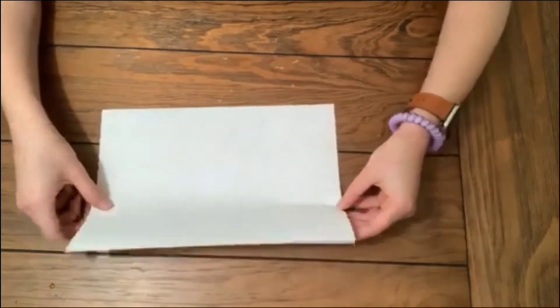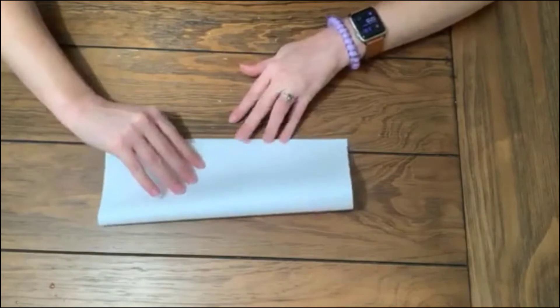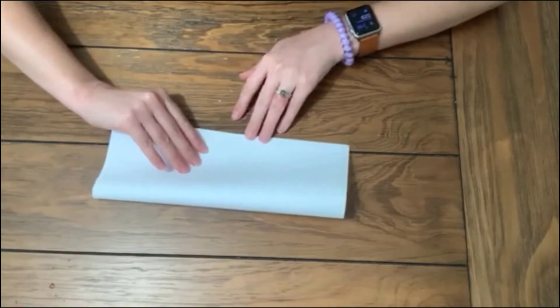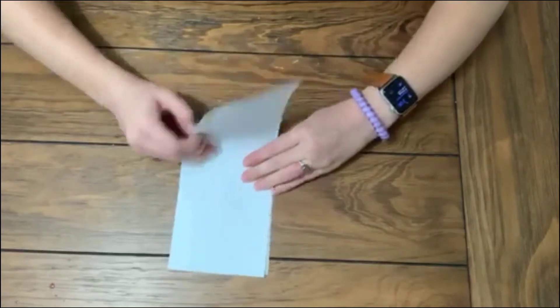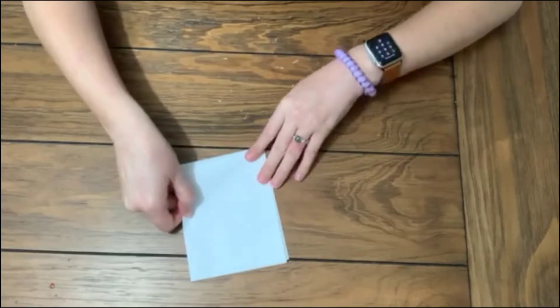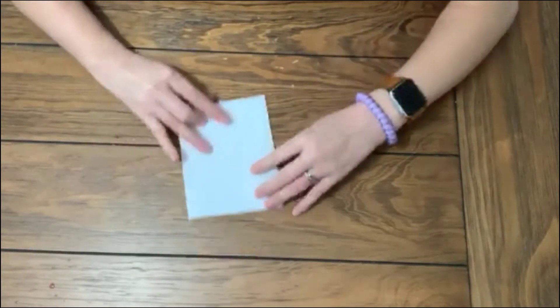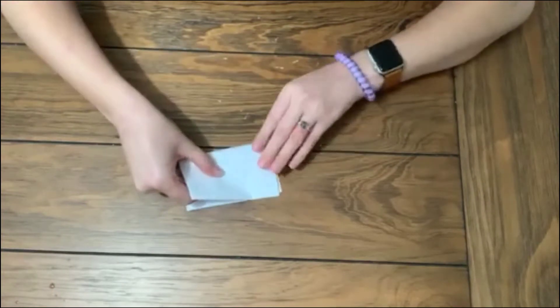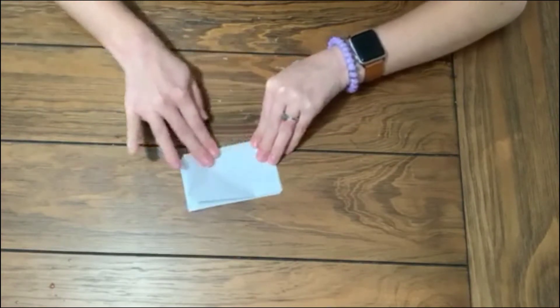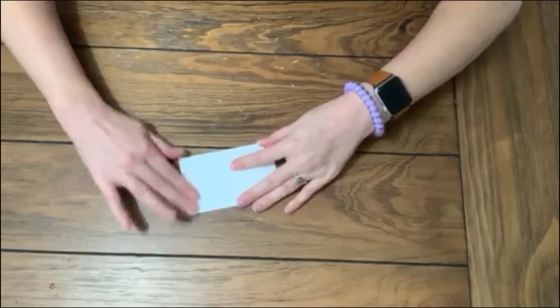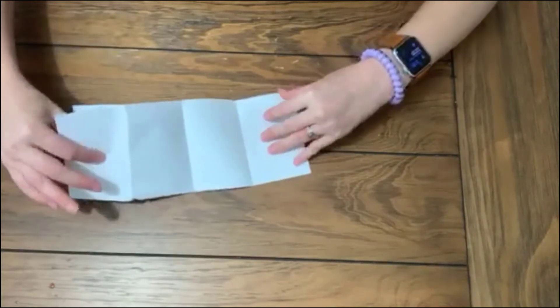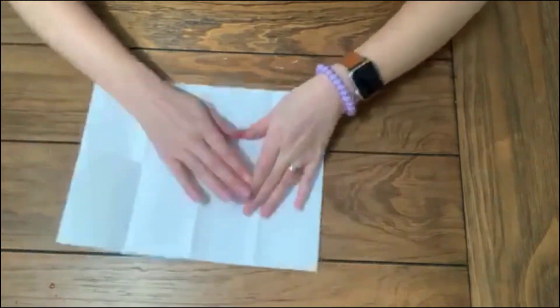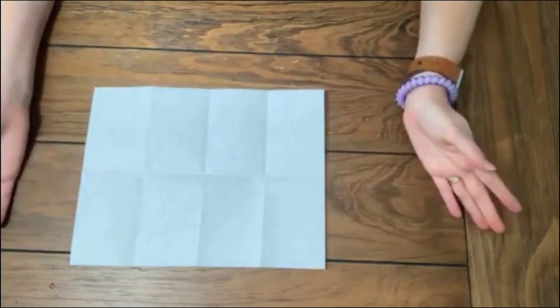So what you'll do is fold it in half like this. Then you will fold it in half again and one more time. And this helps you find your panels. Then you will unfold it and it will look like this.